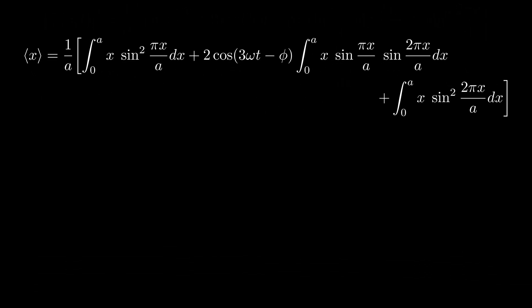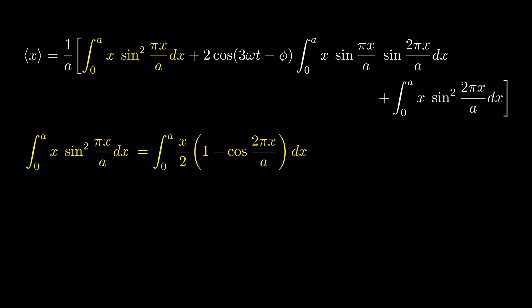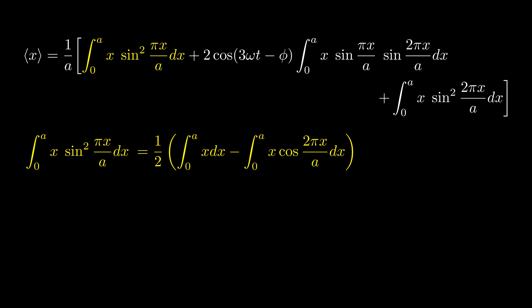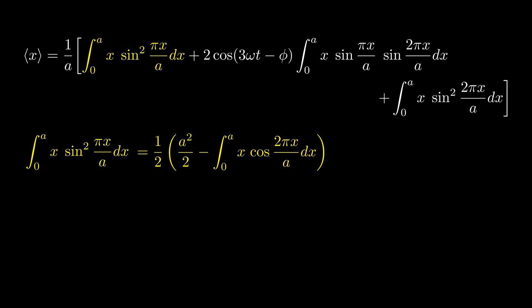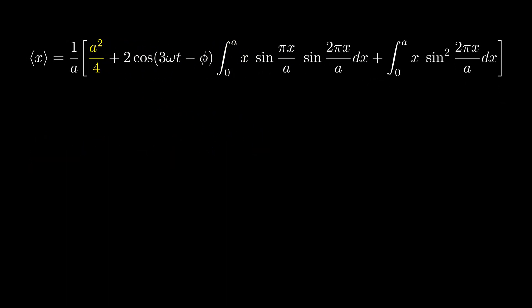We have three integrals to solve. The first part contains the position variable multiplied by the sine squared function. To simplify, we apply a trigonometric identity transforming the sine squared term into a cosine expression, then split the integral into two parts. The first part is simply the integral of x from 0 to a. By the symmetry of the odd function, the integral of x times cosine evaluates to 0, so the result simplifies to a²/4. The third integral follows the same steps, so its result is also a²/4.